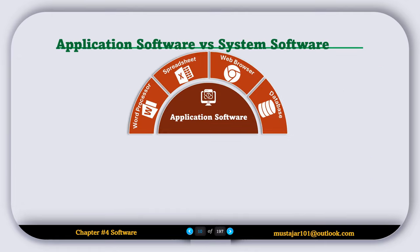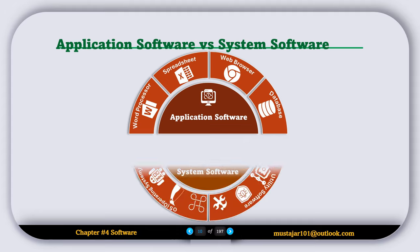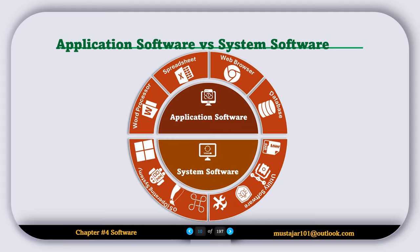To summarize, application software has four types: word processors, spreadsheets, web browsers, and databases. System software has two types: utility software and operating systems. You can see the examples on screen — feel free to pause the video to review them.